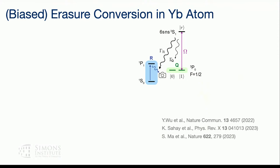The kind of neutral atom we work with is different from what you heard about yesterday. Specifically, we are interested in a metastable ytterbium qubit, where the qubit is encoded not in the ground state subspace of an atom but in a metastable subspace. These metastable states are still long-lived — several seconds — though not as long-lived as ground states.